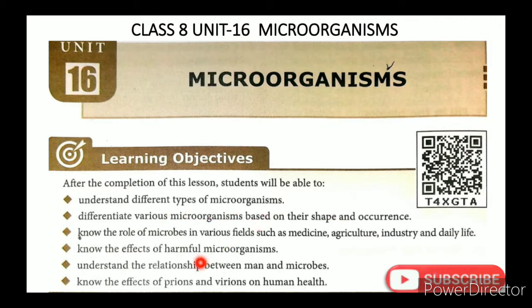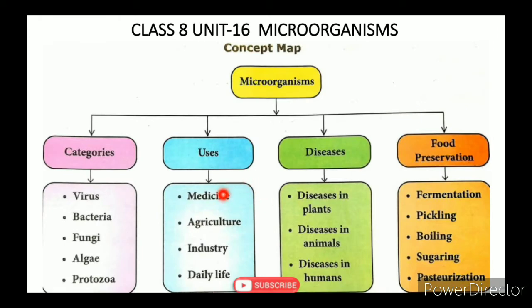Now, types of microorganisms, effects of prions and virions, and the role of microbes in various fields are covered in the video. The QR code link is in the description box. In total, there are 9 topics on how we use microorganisms. The first 5 subtopics cover Medicine, Agriculture, and Industry. The 9th topic covers harmful microorganisms and diseases.